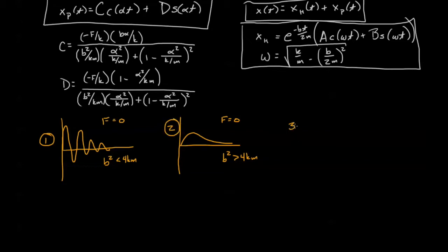And our third unforced scenario is critically damped. We know that to be F equals zero, B squared equals 4km. And that one might look a little bit like this.